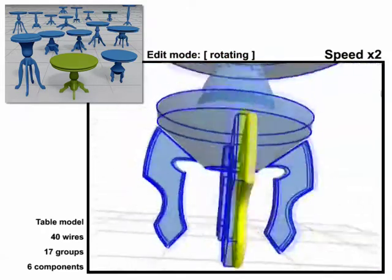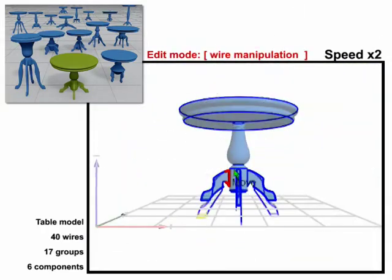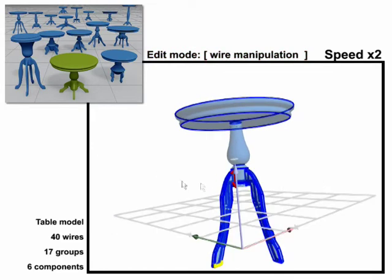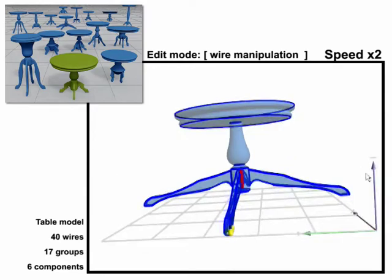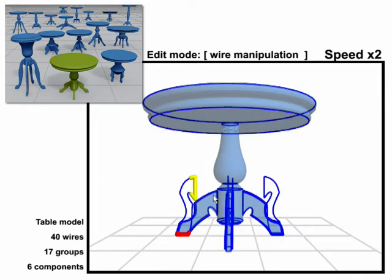We support several different interaction modes. For instance, here the user directly manipulates some wires which serve as handle constraints, and the editing operation is then propagated to the remaining wires by our algorithm.